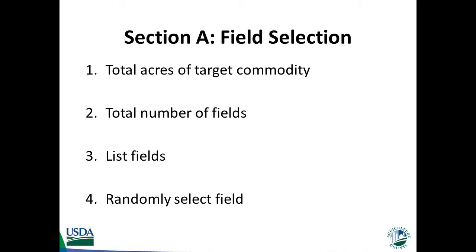Field-level samples supply the specific details needed for the economic and chemical use analysis for that particular field, which is then used to represent other fields just like it. Randomness is essential to making accurate estimates for the whole target commodity enterprise from just that one selected field. Once the field is selected, most questions in the questionnaire refer to only this field.